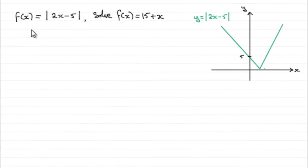Okay then, for this part of the question, we know that f(x) equals the mod of 2x minus 5 and we've got to solve f(x) = 15 + x. Now, there's two ways of doing this.